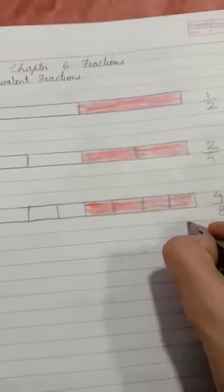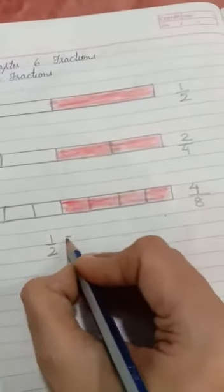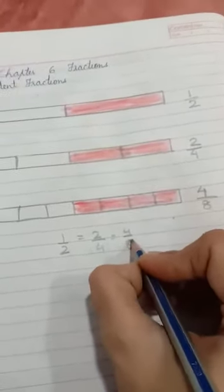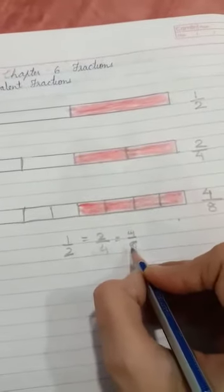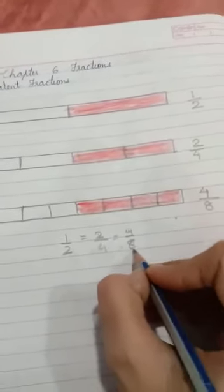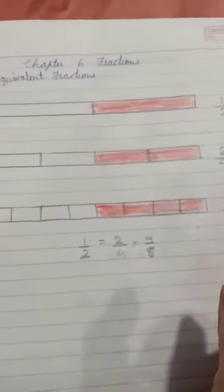So, the equivalent fractions are fractions that have different numerators. One by two is equal to two by four is equal to four by eight. The fractions that have different numerators and denominators but are equal to the same value are called equivalent fractions.